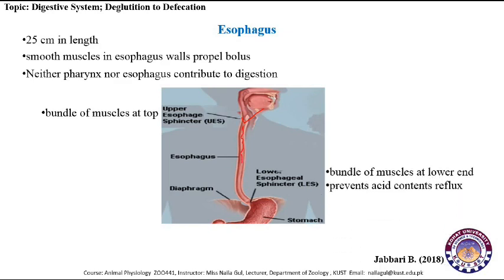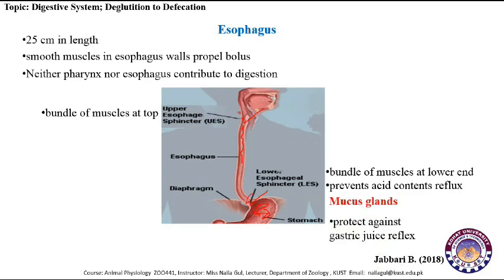At the lower end, the esophagus has the lower esophageal sphincter, also called the cardiac sphincter, where the esophagus meets the stomach. When the lower esophageal sphincter is closed, it prevents acid and stomach contents from traveling backward from the stomach. At this junction, numerous mucus glands are present to secrete mucus to protect against gastric juice reflux.